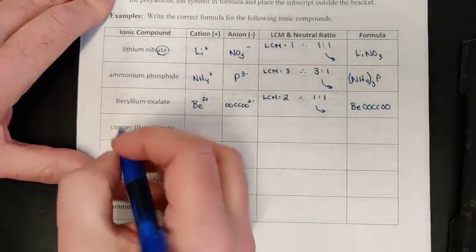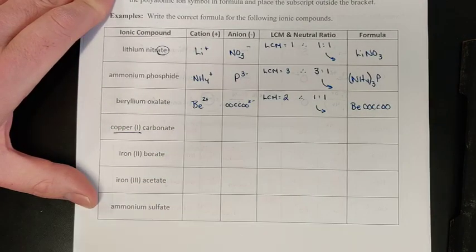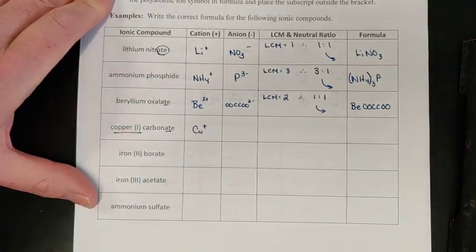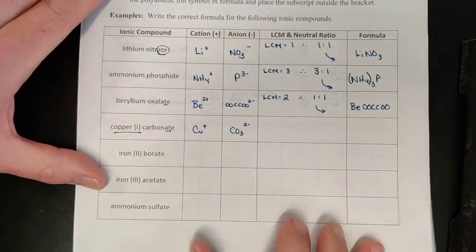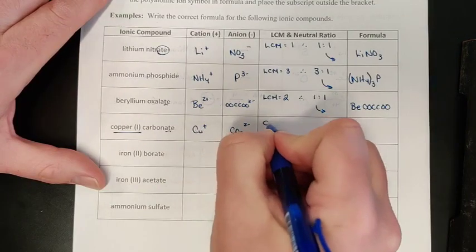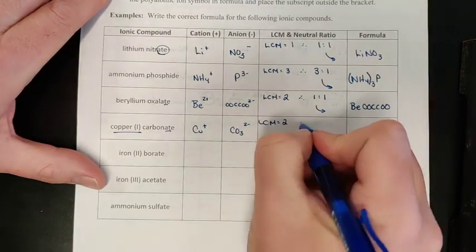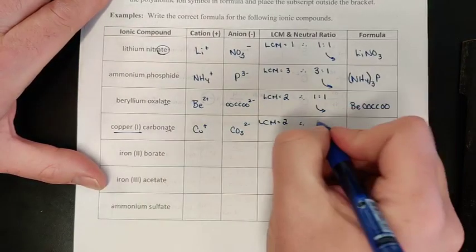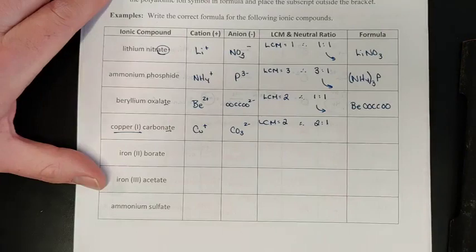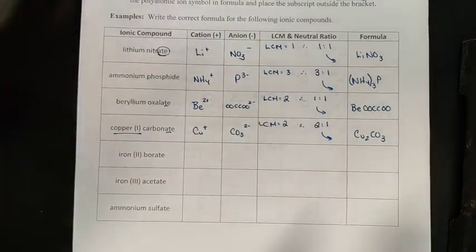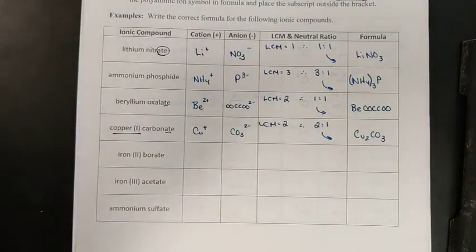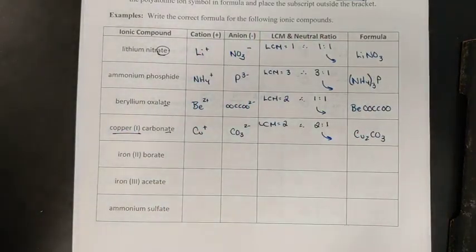For multivalent copper with a one plus charge and carbonate: carbonate is CO3 with a two minus charge. The LCM between one and two is two, meaning we need two copper cations to balance one carbonate anion. The formula becomes Cu2CO3. Again, no brackets are necessary here because there's only one polyatomic ion present.